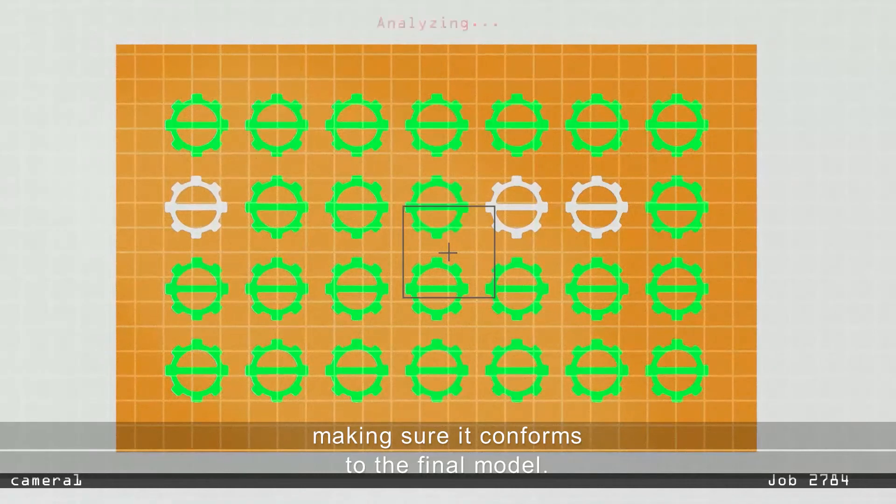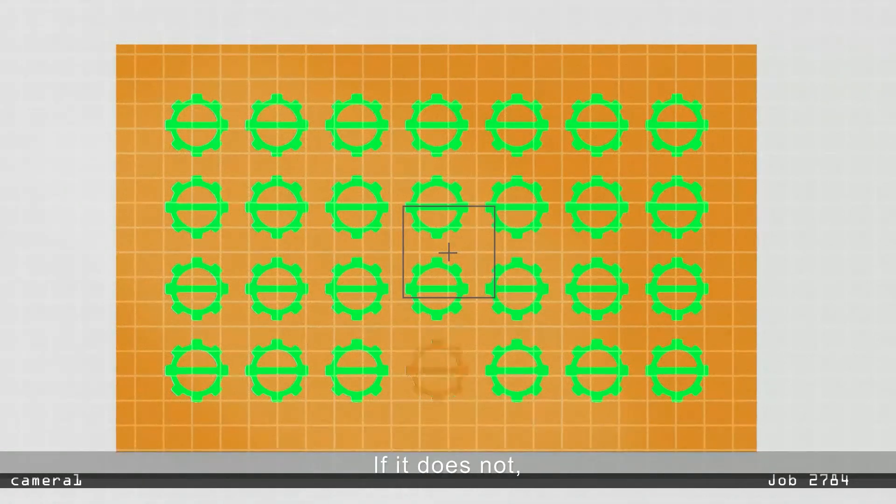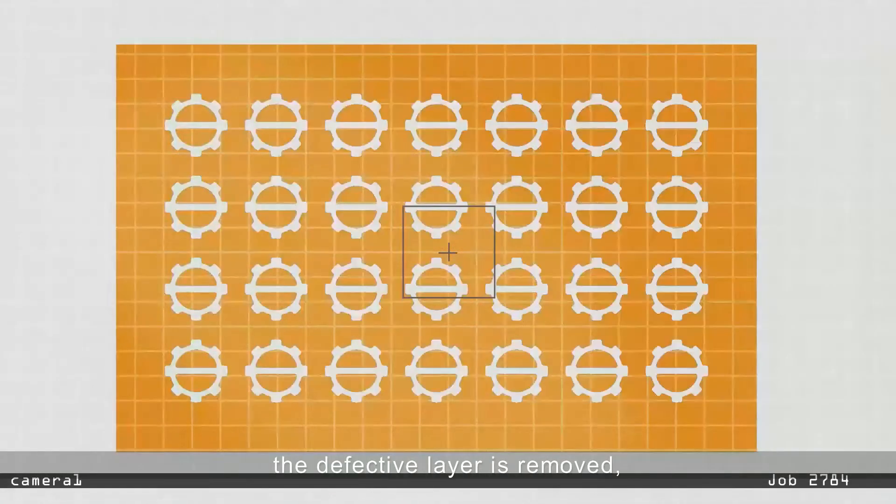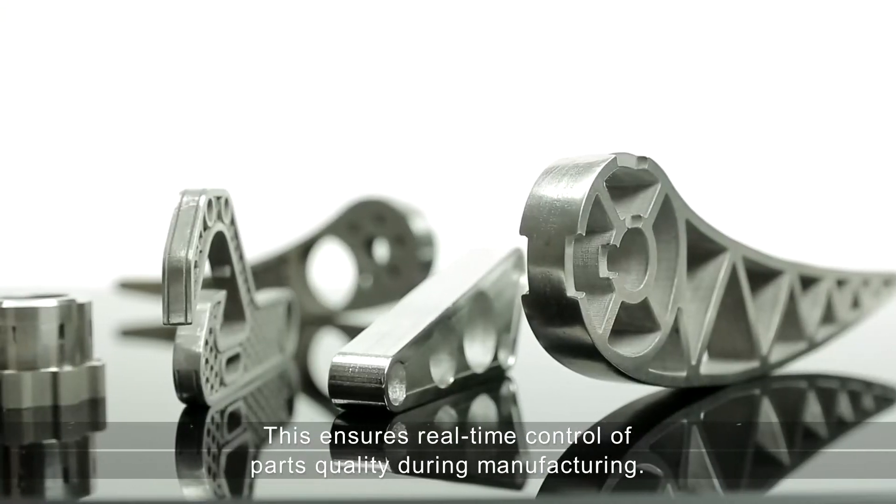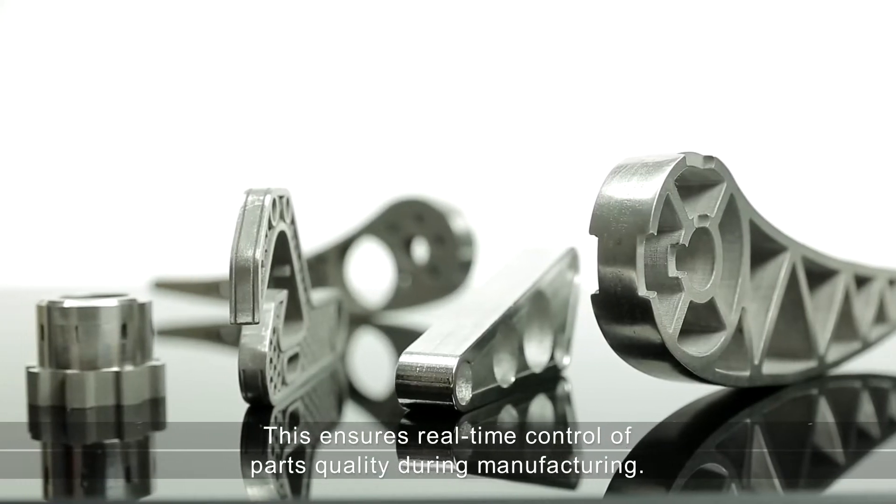A high-resolution camera analyzes the layer, making sure it conforms to the final model. If it does not, the defective layer is removed and the item repeats the previous layer without affecting the process. This ensures real-time control of parts quality during manufacturing.